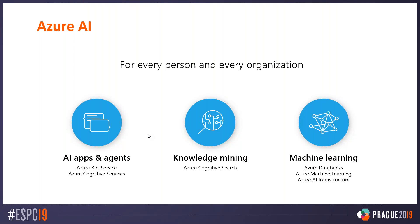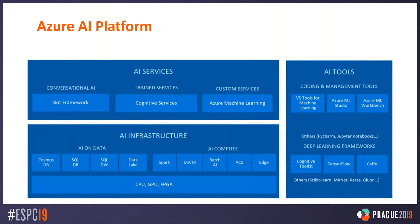Within the Azure AI platform there are quite a few different surfaces: conversational AI where we talk about the bot framework, pre-populated machine learning models called cognitive services, and custom surfaces where you build your own machine learning model. What we're going to talk about today is mainly focused on the bot framework and the cognitive services. There are a whole lot of different AI tools and infrastructure available within the platform.